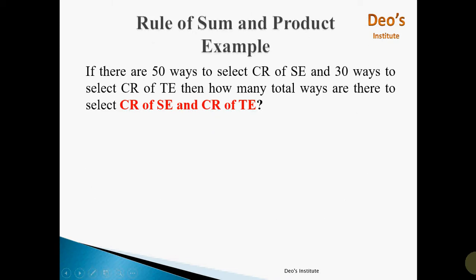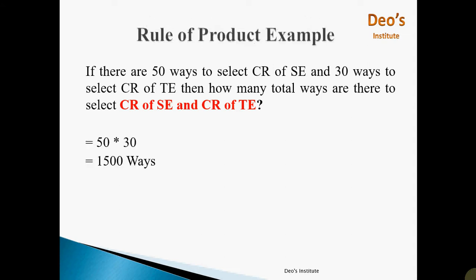To get a clearer idea, we will see one example. Consider there are 50 ways to select CR of SE and 30 ways to select CR of T. Then, how many total ways are there to select CR of SE and CR of T? Here we have to select 1 CR from SE and 1 CR from T, so the total number of ways will be 50 into 30, which is equal to 1500 ways, because both experiments will take place.